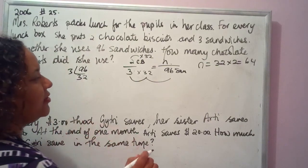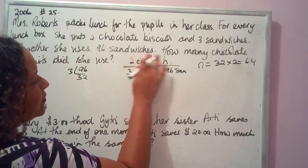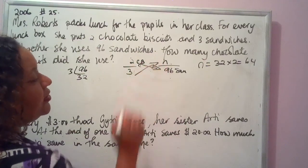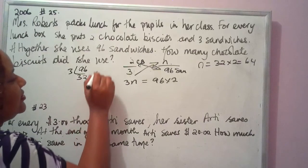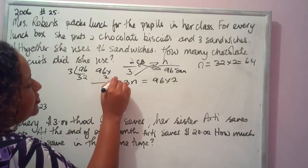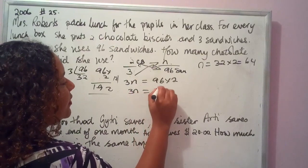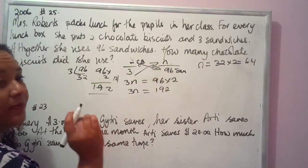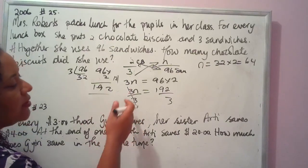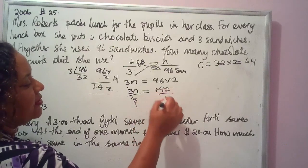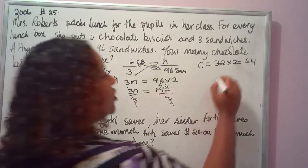Using the cross multiplication method: cross multiply to get 3N equals 96 by 2. 96 by 2 equals 192, so 3N equals 192. Divide both sides by 3: N equals 192 divided by 3 equals 64 chocolate biscuits. Both methods give the same answer of 64 chocolate biscuits.